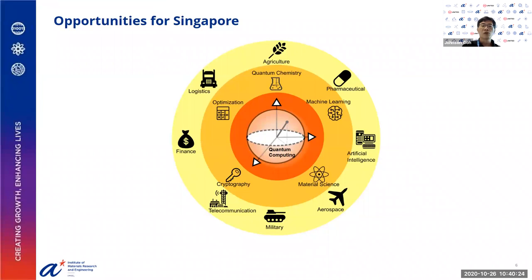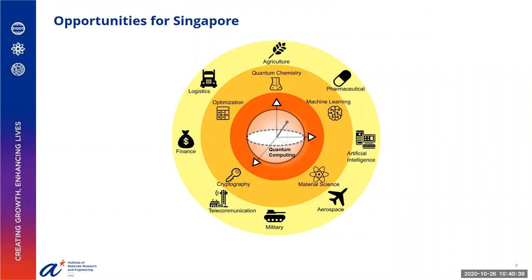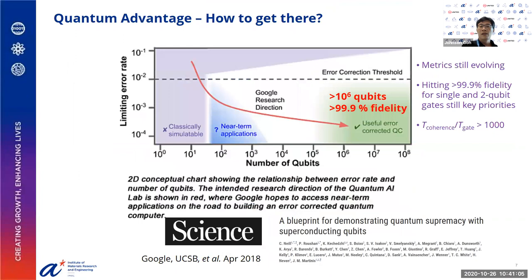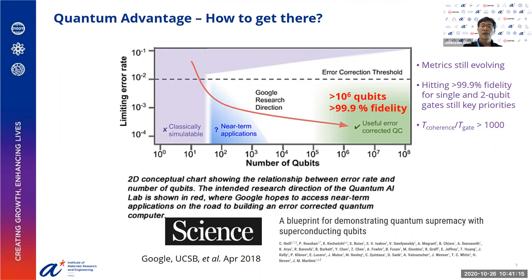What are the opportunities in this space for Singapore? With quantum, the exponential speed-up in computational power promises to impact many fields, ranging from quantum chemistry to optimization problems. These in turn find applications in agriculture, medicine, finance, transport routing, communications, and military applications. And here are some examples of agencies and organizations in Singapore that could benefit from quantum computing.